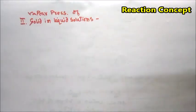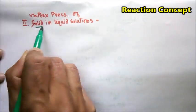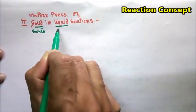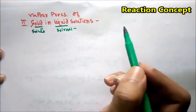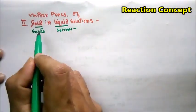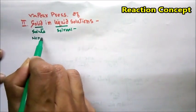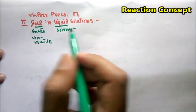Now for the second type of solution — a solid dissolved in a liquid. In this case, the solid is the solute and the liquid is the solvent. An important condition here is that the solid solute is non-volatile, meaning it cannot go into the vapor state. The solvent, however, is volatile.